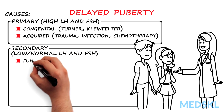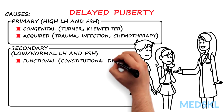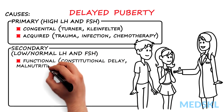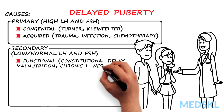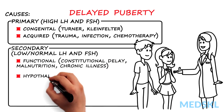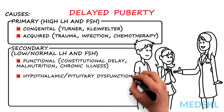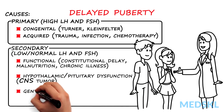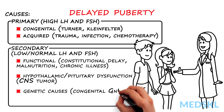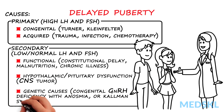Secondary gonadal disorders are associated with low or normal LH and FSH levels, either functional — for example, constitutional delay of puberty, malnutrition, chronic illness, hyperprolactinemia, hypothyroidism, or hypothalamic/pituitary dysfunction such as a central nervous system tumor — or genetic causes, for example congenital GnRH deficiency with anosmia, also known as Kallmann syndrome.